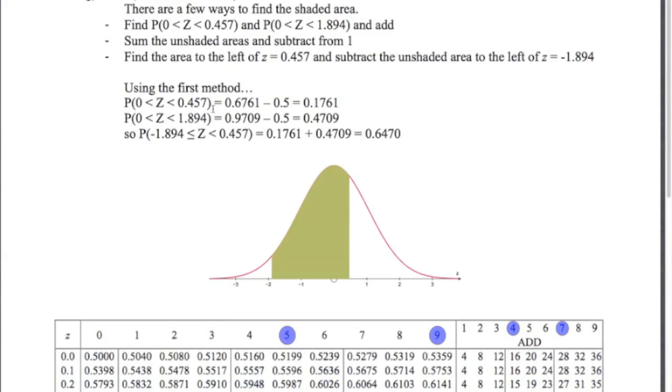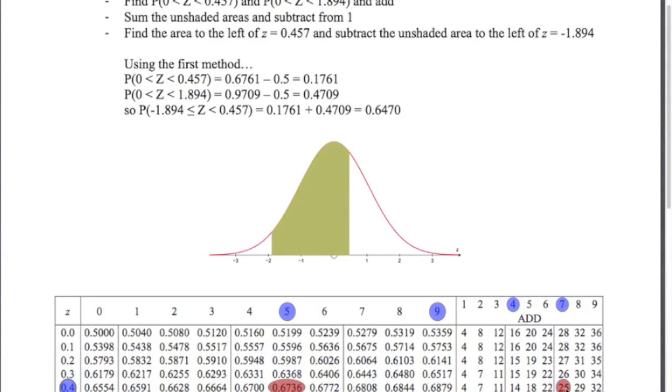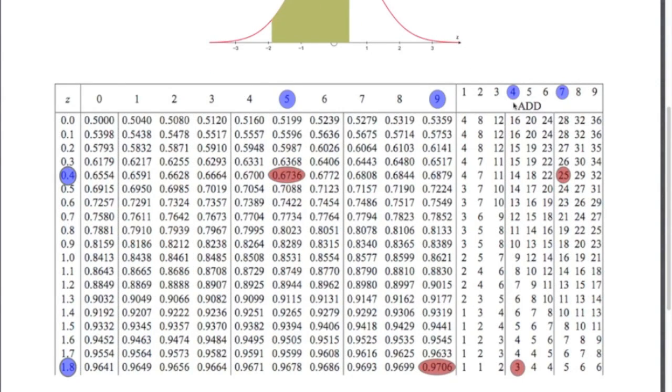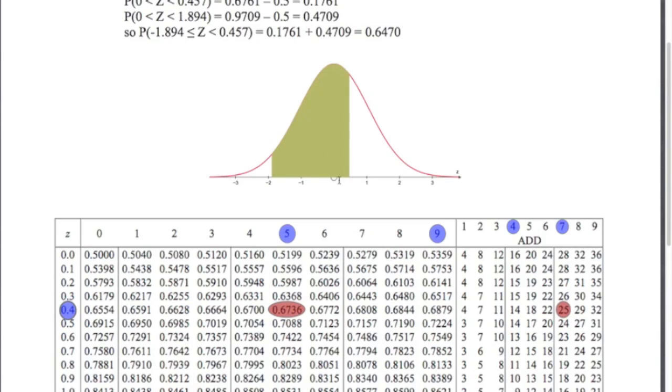So the probability Z is between 0 and 0.457. I look up 0.457 in the tables. 0.6736 plus 0.0025. That gives me 0.6761. That's from there all the way down. So I subtract 0.5 off, which gives me this little area from here to here. 0.1761. If I want to work out the area from minus 1.894 to 0, that's just the same as working out the area from 1.894 to 0. So I look up 1.894. 0.9706 plus 0.0003. So that gives me 0.9709. Remember that's the area from there all the way down. So I've got to subtract 0.5 off that, to just give me the area from there to 0. Once I've got those two values, I just add them together to give me the answer, 0.6470.